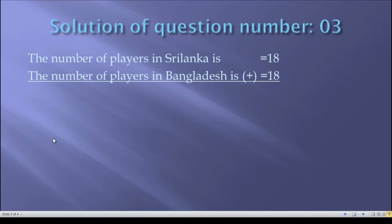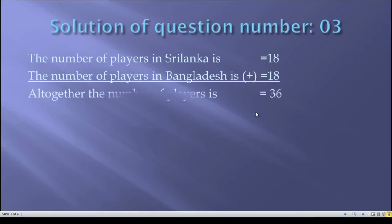You will notice that I write a plus sign because it is a math of adding — a math of summation. That is why I write this sign, and you should also write this sign whenever you solve such types of questions. In the second line you write that the number of players in Bangladesh team is 18. Now we will add 18 and 18 together, and in the final line we will write that all together the number of players is 36. You may ask how we get 36.